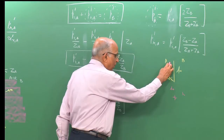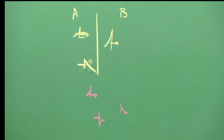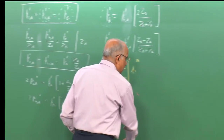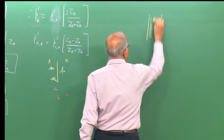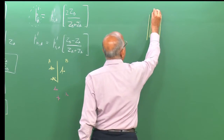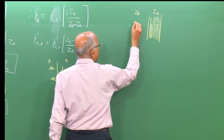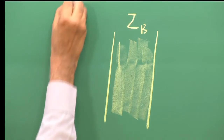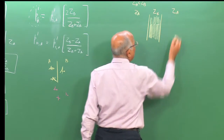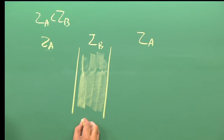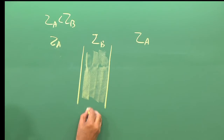Let us generalize: consider a medium with high impedance Z_b sandwiched by two regions of lower impedance Z_a. A compression wave enters the high-impedance slab. At the first interface (Z_b > Z_a), it reflects as a compression and a larger-magnitude compression is transmitted into the slab.